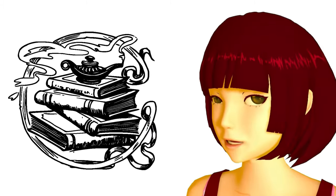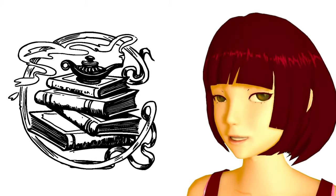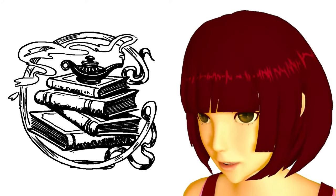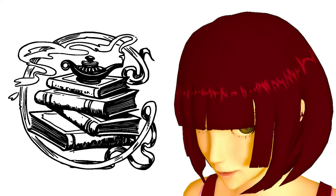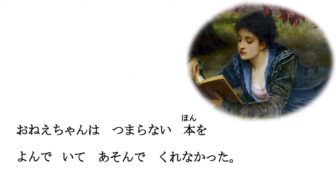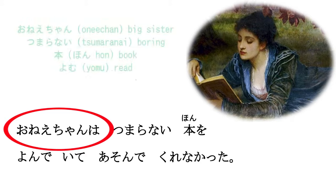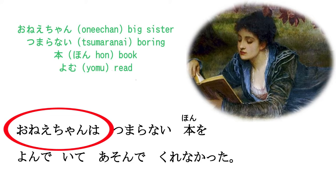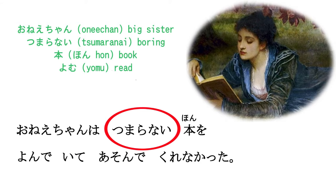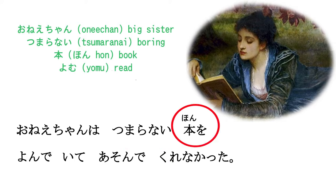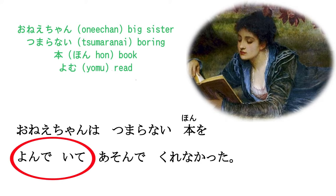The next sentence is going to be a little bit more complex, but don't worry. Onee-chan means big sister. Nee is sister, and chan, as you know, is a cute, friendly honorific. O is also an honorific, so onee-chan means big sister. Tsumaranai means dull or boring. Hon, as we know, is book. Yomu means read. Yonde iru — you put yomu into the te-form and add iru — and that means 'is reading.' And then we're putting the iru itself into the te-form.